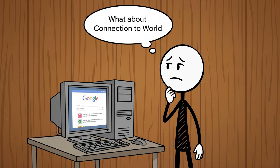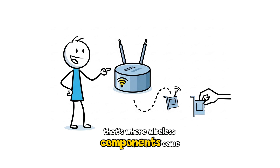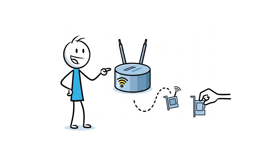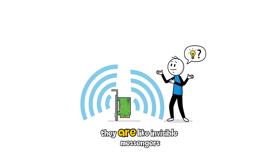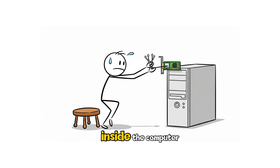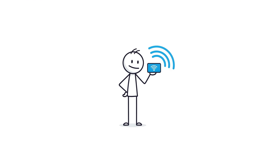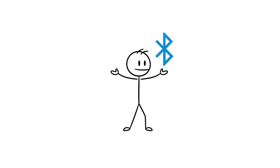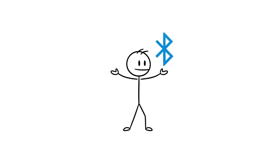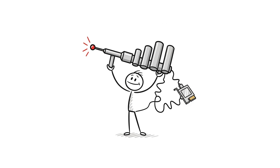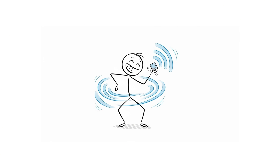What about connecting to the world? That's where wireless components come in, like Wi-Fi cards and Bluetooth. They are like invisible messengers inside the computer. Wi-Fi helps you connect to the internet without cables, while Bluetooth lets you connect devices like headphones, keyboards, or phones. These components make communication fast and wire-free.